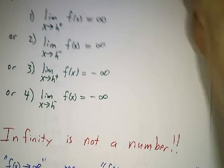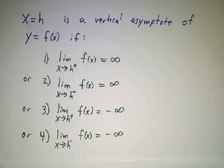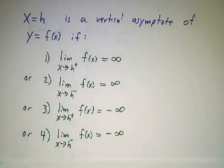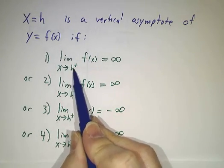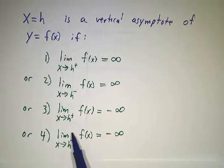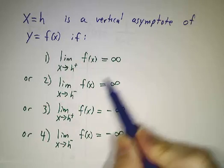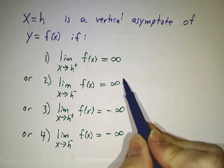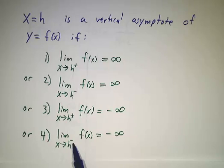In other words, you could have a vertical asymptote if the limit as you approach that particular value, either from above or below, is infinity, or if the limit as you approach either from above or below is minus infinity.